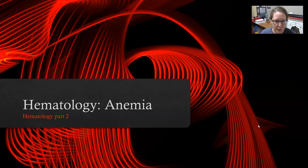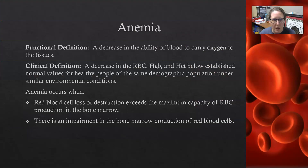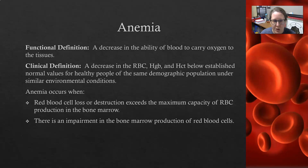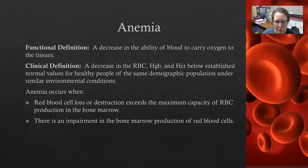Hi everybody, this is Dr. A with a continued series on basics of the lab for student hematology. We're going to look at anemias. Anemia can be defined in a couple of different ways. There's a functional definition, which is a decrease in the ability of blood to carry oxygen to the tissues. And then there's a clinical definition, which is a decrease in the RBC counts, the hemoglobin, and hematocrit below the established normal values for healthy people of the same demographic population under similar environmental conditions.